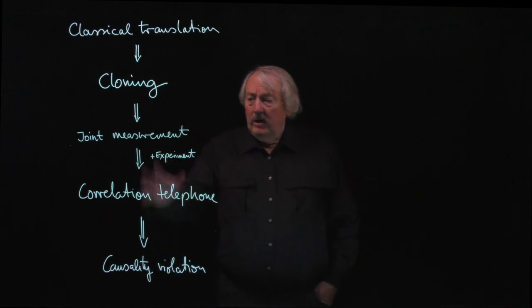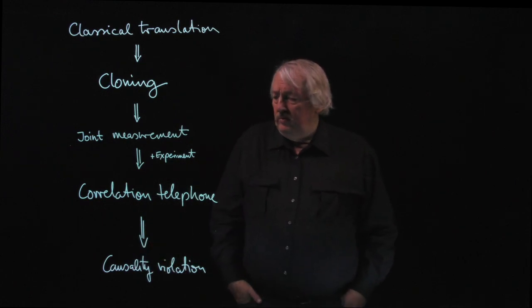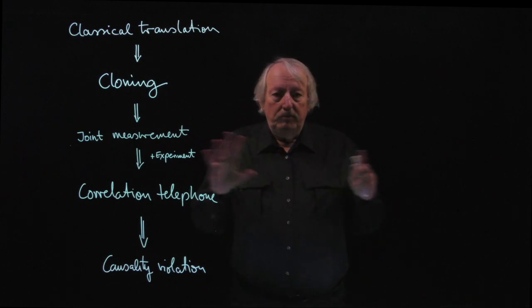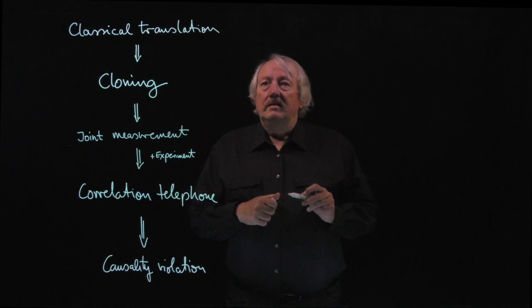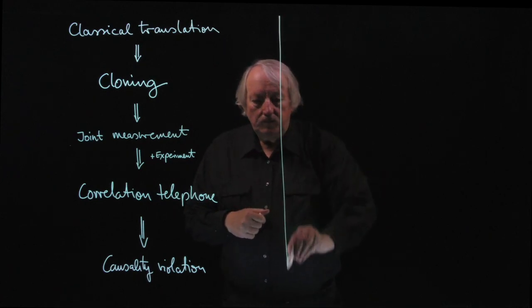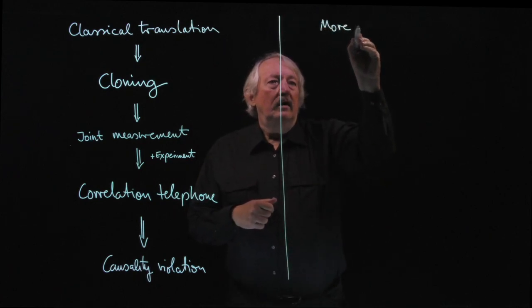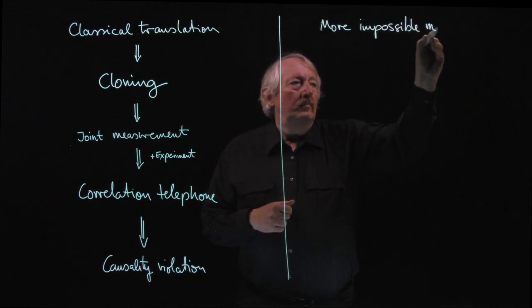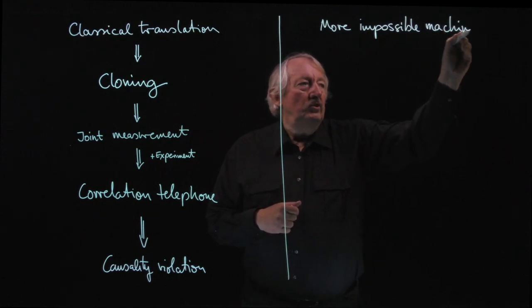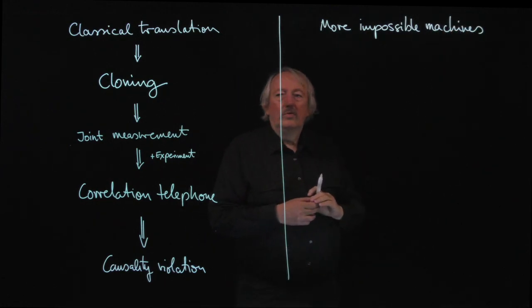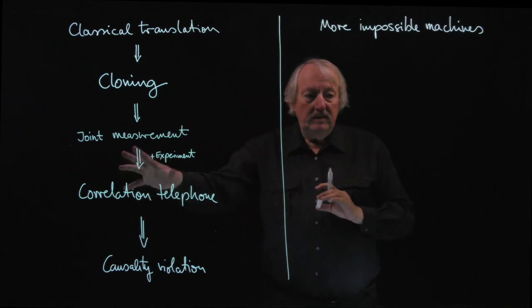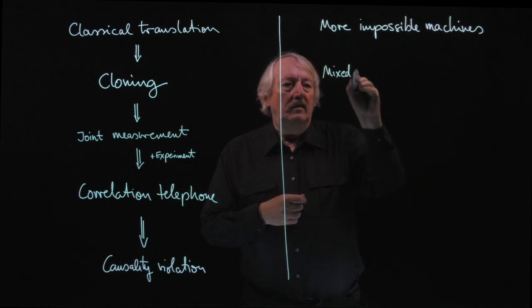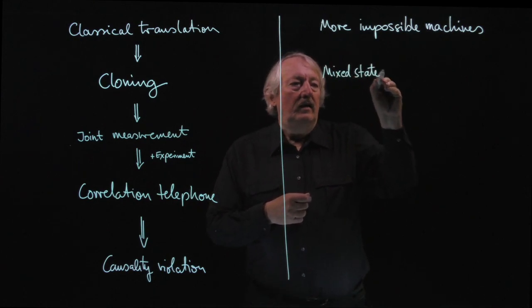Now, this hierarchy is nice but it doesn't exhaust the family of impossible machines of quantum mechanics. So very briefly, let me say a few other things that are impossible. One that we already saw in this context I would call the mixed state problem — unpolarized light.